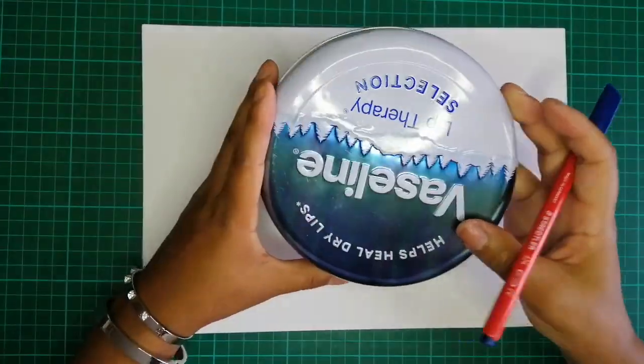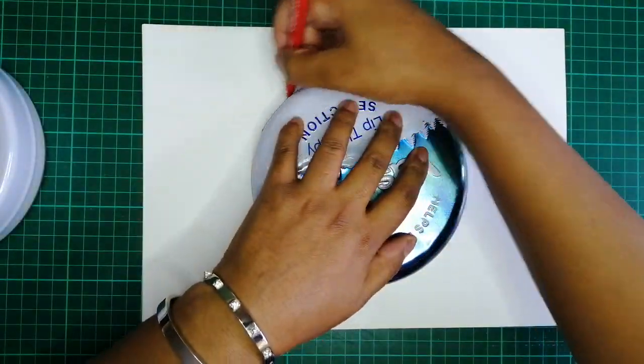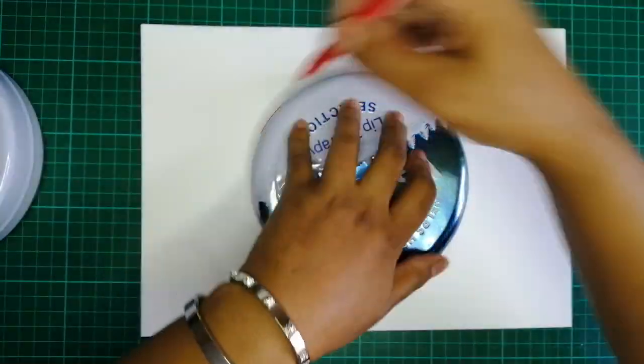But anyway, first draw your circle to your preferred size. Mine had the diameter of about 15 centimeters. After you've drawn your circle, add 1 centimeter for seam allowance.